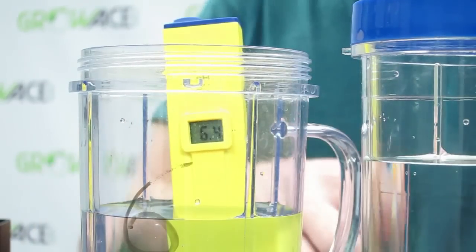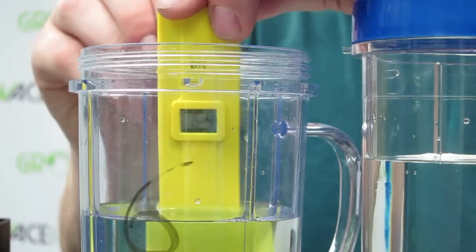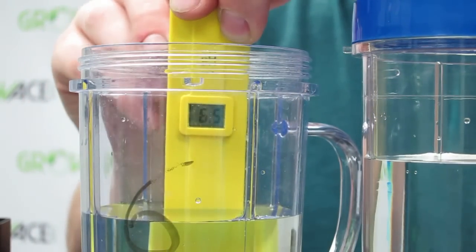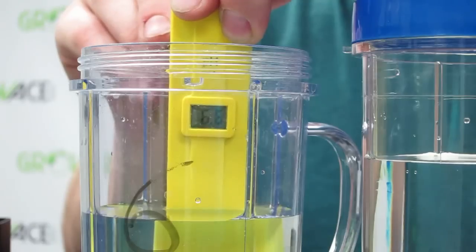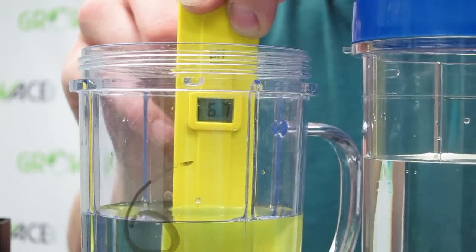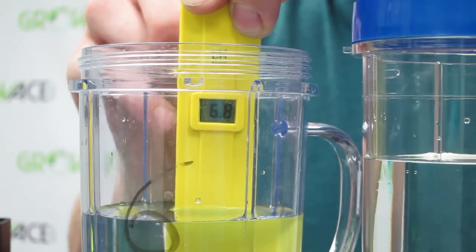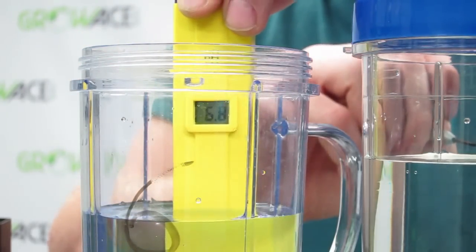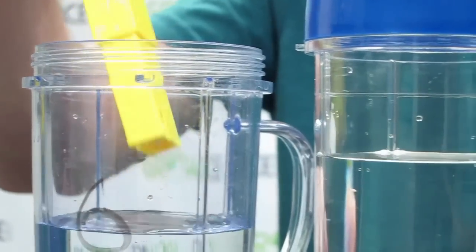If the meter doesn't read 6.8, take the screwdriver and set to 6.8. Turning the adjustment screw to the left raises the reading and turning it to the right will lower the reading. Then rinse it off with some distilled water.